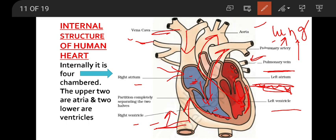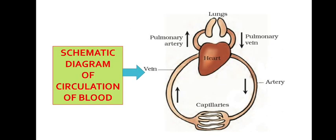Once the blood carries oxygen to the cells, the oxygen is taken by the cells, where oxygen and food react to release energy. Then from the cells, the blood carries carbon dioxide and comes back to the heart again.